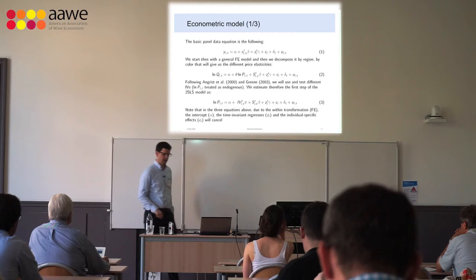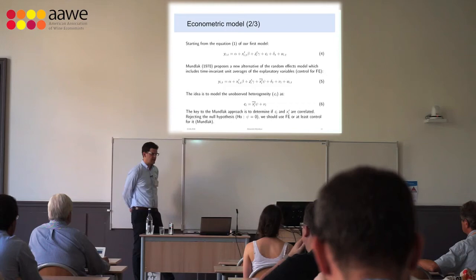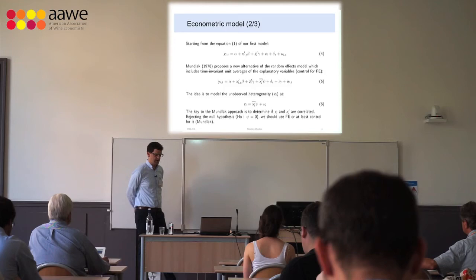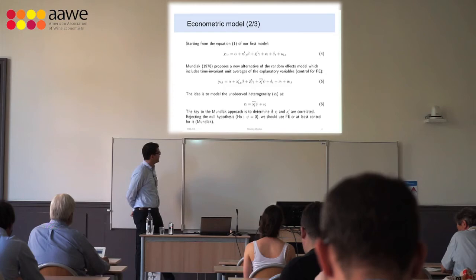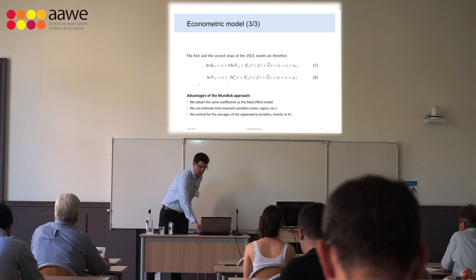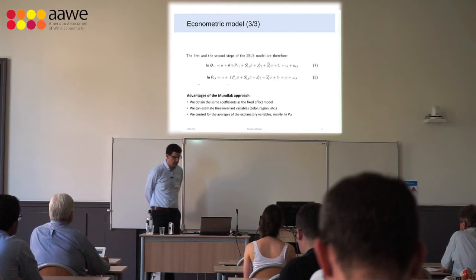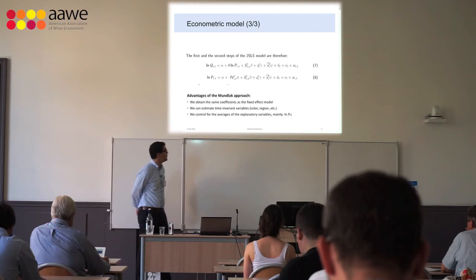One solution is to run a random effects model and model the unobserved heterogeneity as a function of the average prices — this is the Mundlak approach. If the coefficient phi is significantly different from zero, we have a fixed effect result, which also confirms the Hausman test. The advantages of this approach are that we obtain the same coefficients as the fixed effect model, we can estimate time-invariant variables like color and region, and we control for averages of the explanatory variables, mainly the log of prices.